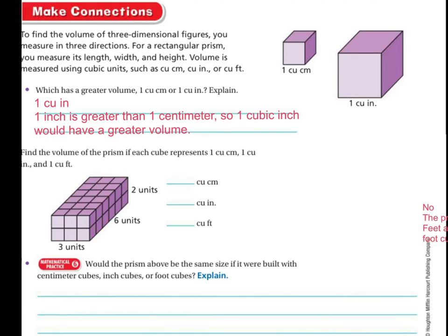Well, one cubic centimeter, so let's just say these are centimeters. It's still going to be 3 times 6, which is 18, plus 2, which is 36. No matter if these are inches, or centimeters, or feet, I'm still going to do 2 times 3 times 6, or 3 times 6 times 2. So no matter what, I'm going to get 36 every single time.